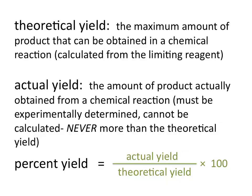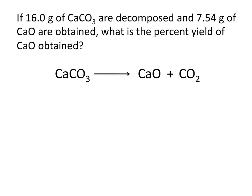The percent yield then is a ratio of the actual yield to the theoretical yield. And you multiply that by 100 to give you a percent. Let's go ahead and look at an example. If 16 grams of CaCO3 are decomposed and 7.54 grams of CaO are obtained, what is the percent yield of CaO obtained?